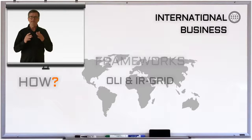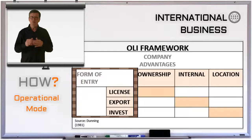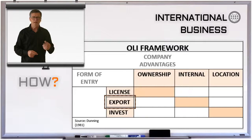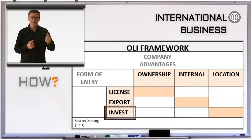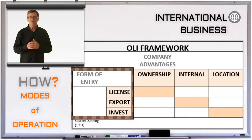When a company completes the OLI analysis, they can determine what form — or in international business terminology, what operational mode — they should use in a specific market or country. For example, should they license their product, export indirectly or directly, or make a bigger commitment such as a direct foreign investment — like building or buying a factory or a distribution center? These choices are referred to as the modes of operation.